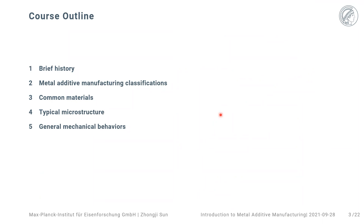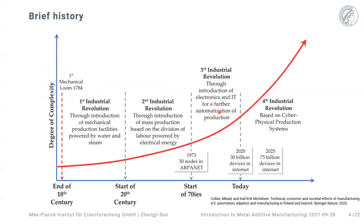This course is mainly designed for undergraduate or master's students who have little knowledge about additive manufacturing. I will give a brief history on the development of the technique, talk about different classifications of the AM process, mention common materials used, typical microstructures formed, and briefly cover general mechanical behaviors.